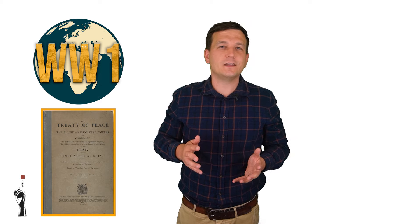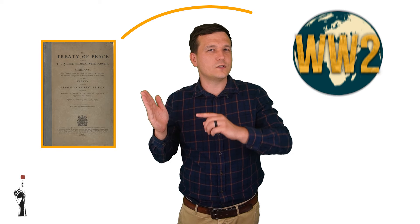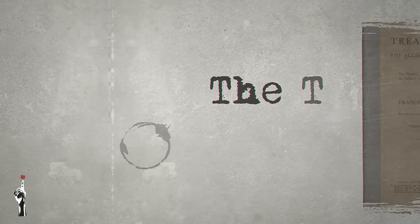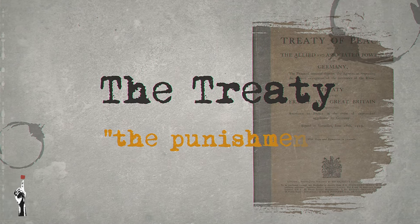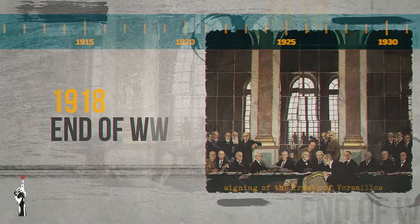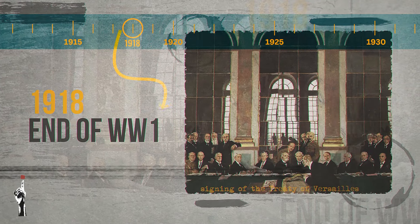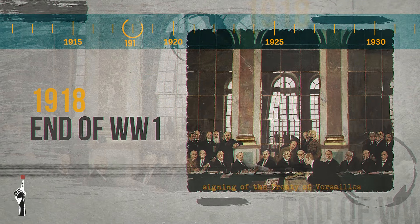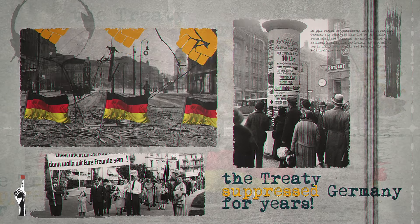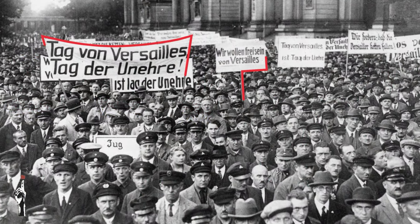So how does this treaty that ended the First World War cause the Second World War? The punishment was implemented after World War One, and in this period the punishment greatly suppressed Germany for years. This led to a build-up of resentment and anger in the nation.